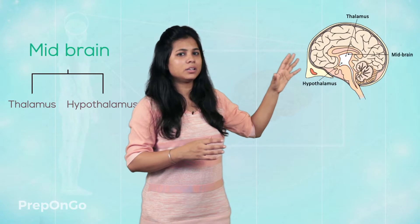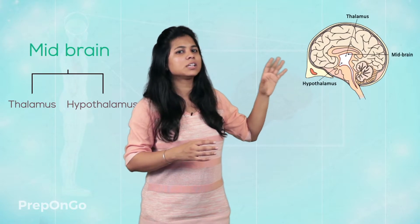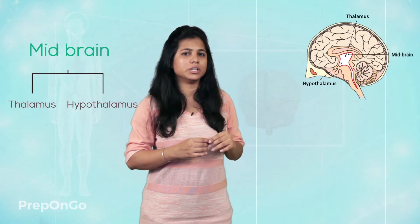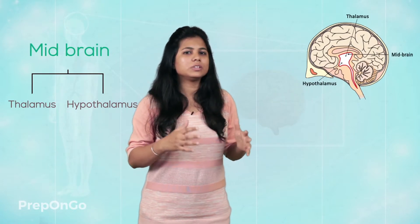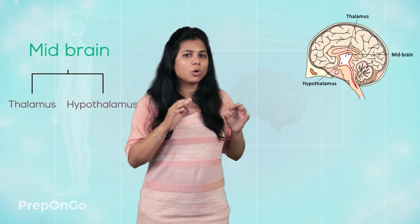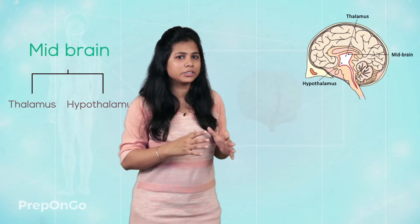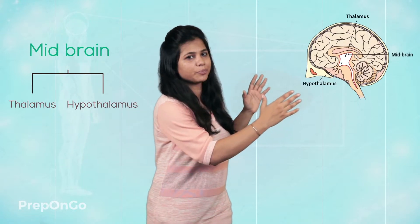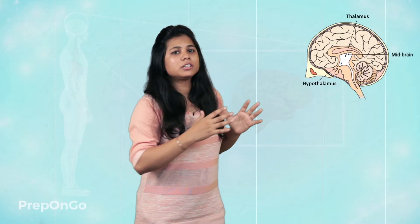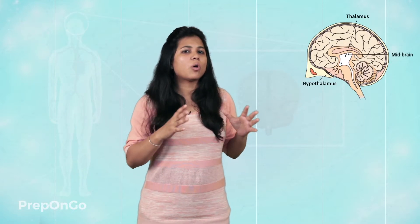When we go to the midbrain, it contains the thalamus and hypothalamus. The midbrain is also the connector of the forebrain and the hindbrain. It generates signals for all the involuntary actions, functioning along with the hindbrain.